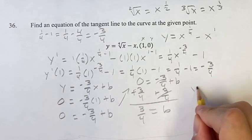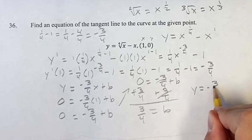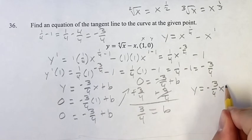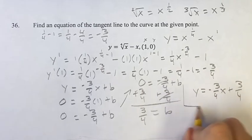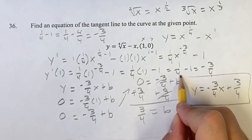So, now we know m, we know b, and we have our final equation. y equals negative three-fourths x plus three-fourths. As always, thank you for liking and subscribing. I'll see you in the next video.